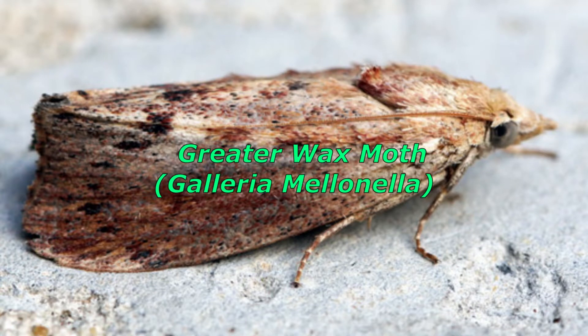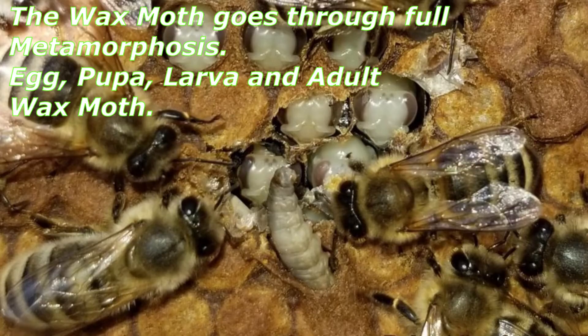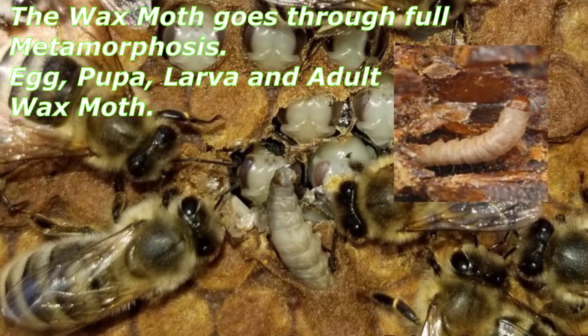There are currently two moths that present problems to beekeepers in the UK. They are the lesser wax moth, Achroia grisella, and the greater wax moth, Galleria mellonella. Both wax moth species undergo complete metamorphosis and have four stages of development: egg, larva, pupa, and adult. Generally speaking, wax moth are considered a minor pest of the honeybee, however they can cause problems for weak hives.